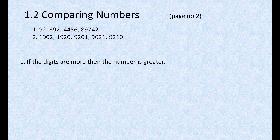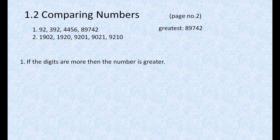Here, the first number contains two digits, the next number has three digits, the next number has four digits, and the next number has five digits. As per this rule, the greatest number is 89,742, because it has five digits — greater compared to the other numbers.